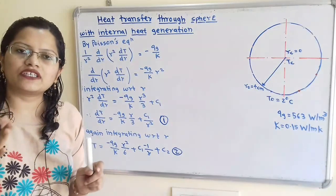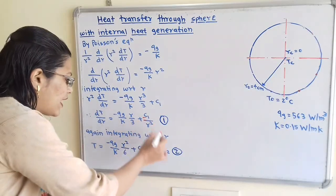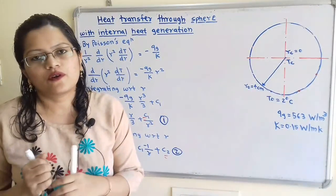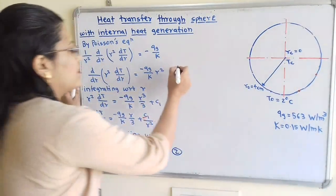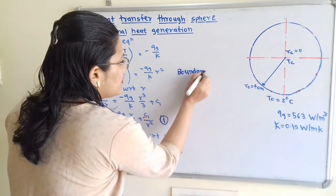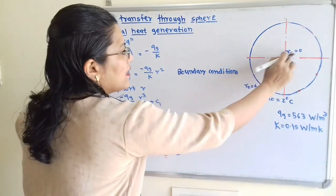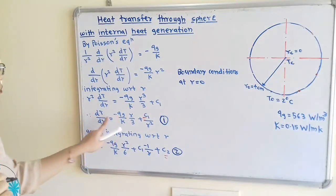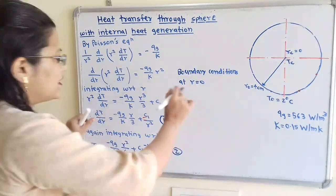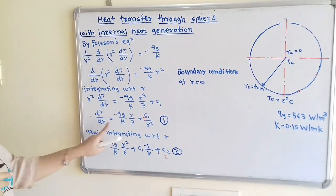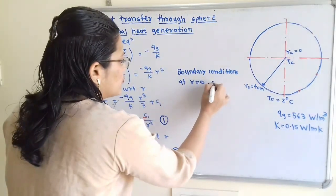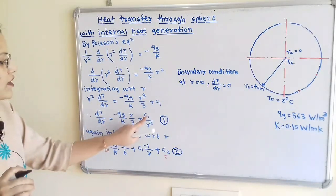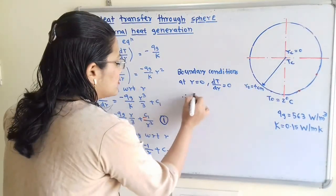For the first boundary condition: at R = 0 (the center), dT/dR = 0 by symmetry. Substituting into equation 1, the term C1/R² must remain finite, which requires C1 = 0. Therefore, C1 = 0.